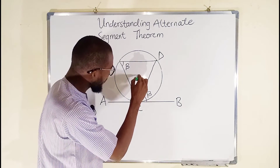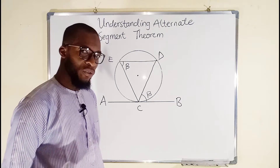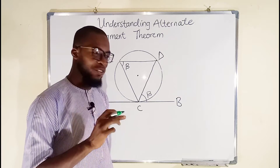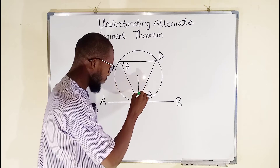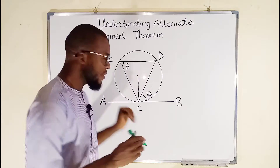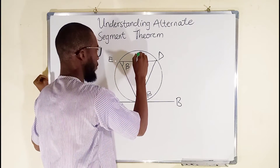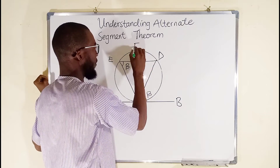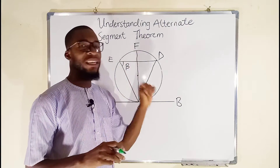Let's assume this is the center of the circle. We want to construct a radius that will touch the point of contact between the circumference and the tangent, which is point C. If we extend the radius to the top, it becomes a diameter. Let me extend it to the top and call this point F. Now we are going to connect F and D together.